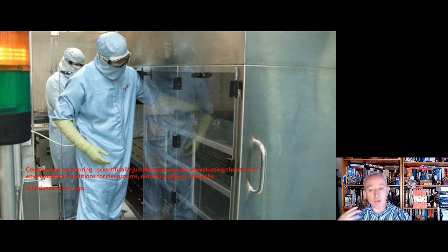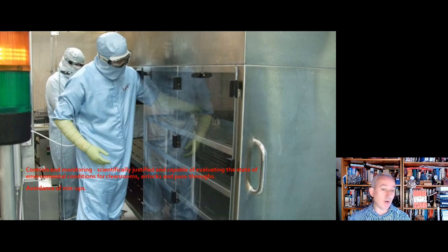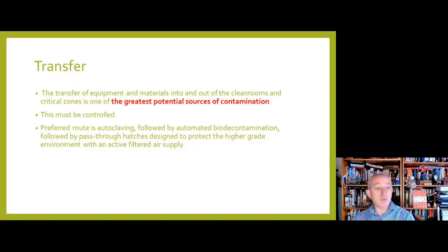Within the clean room there need to be appropriate technical and operational separation measures to prevent mix-up and contamination — whether that's contamination getting into a product, cross-contamination between two different product types, or one product being followed by another. The concept of transfer is really important and gets a big emphasis in this section of the EU GMP Annex 1.